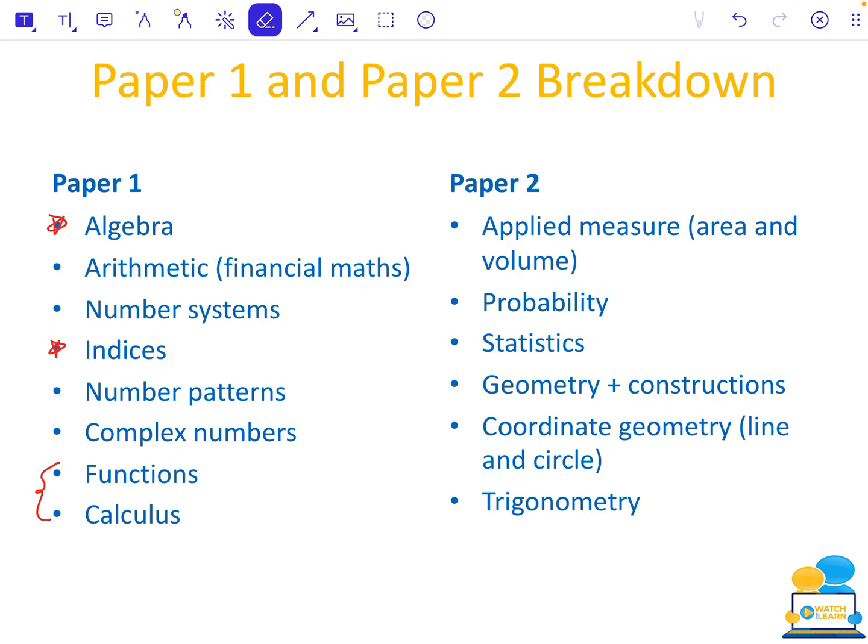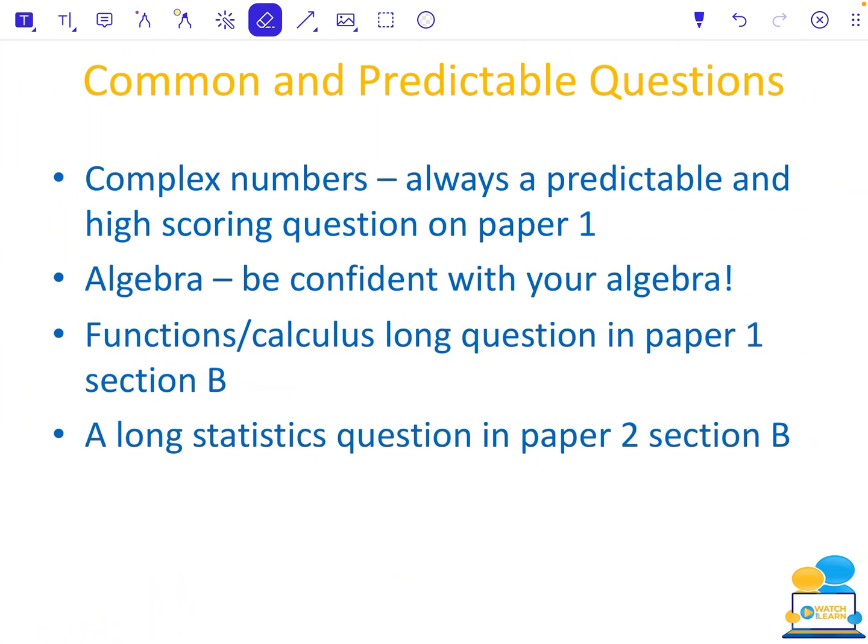Coordinate geometry, the line and the circle, sometimes they can be separate questions, sometimes they can be mingled together. Statistics is a big one for a Section B question, as is applied measure, along with trigonometry. There is a bit of overlap. Algebra comes into everything, so wherever you have algebra, it comes into all of these things as well. You can't avoid your algebra. That is one thing you need to have for definite. Often the questions you might get a geometry question that has a bit of coordinate geometry in it, or trigonometry question that has a bit of coordinate geometry. So it is quite hard to leave out topics.